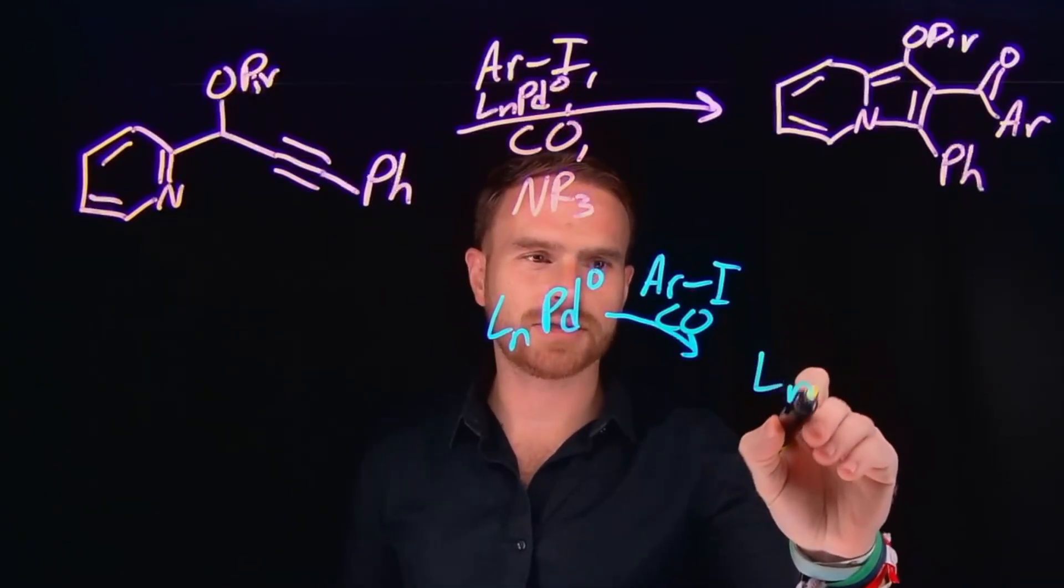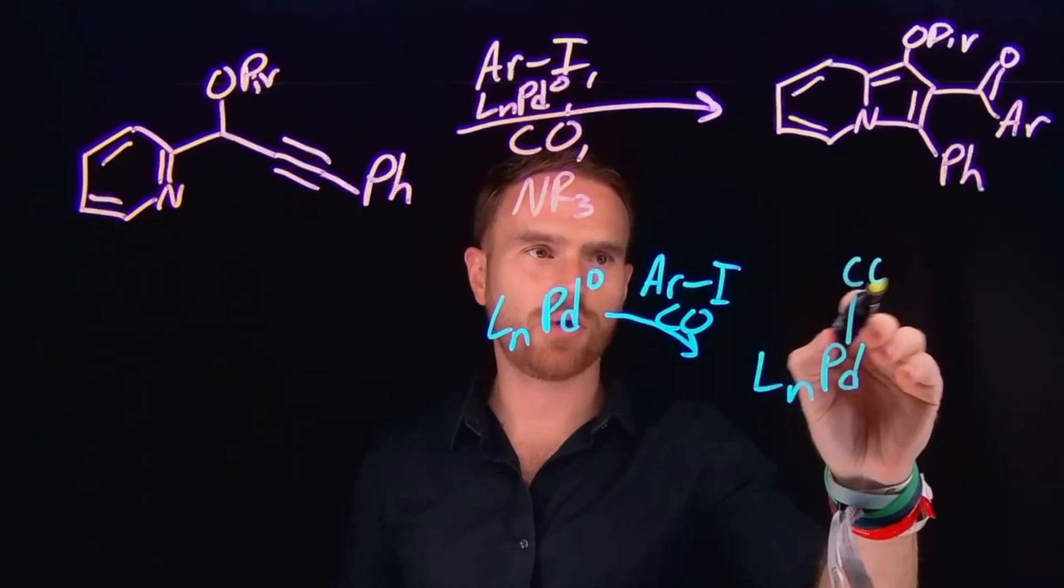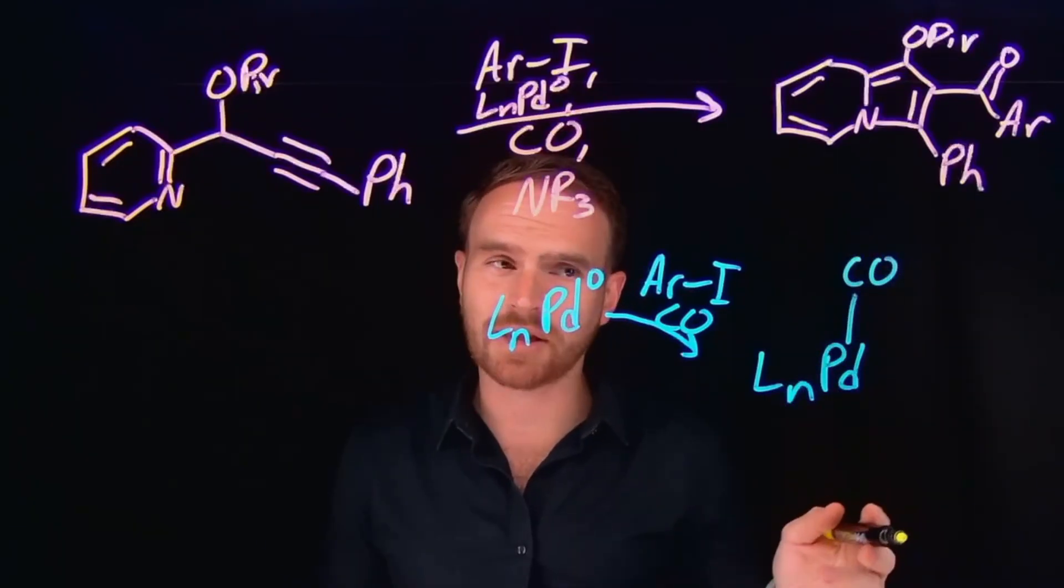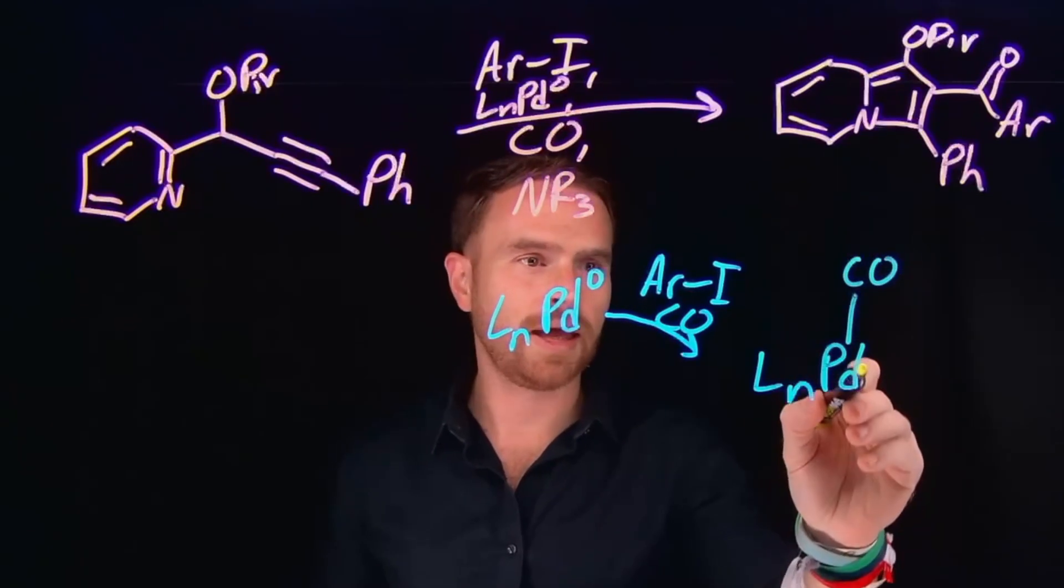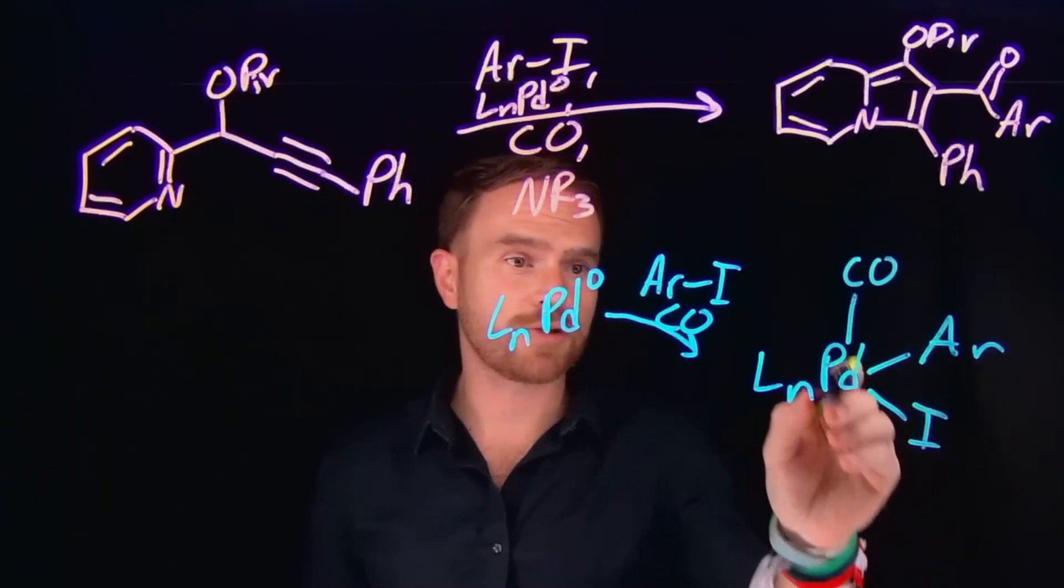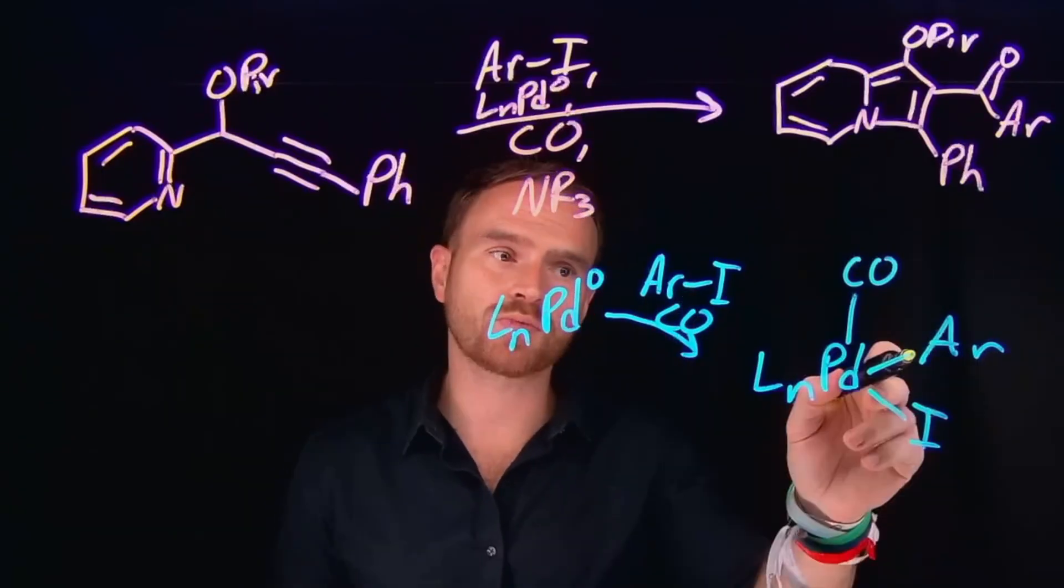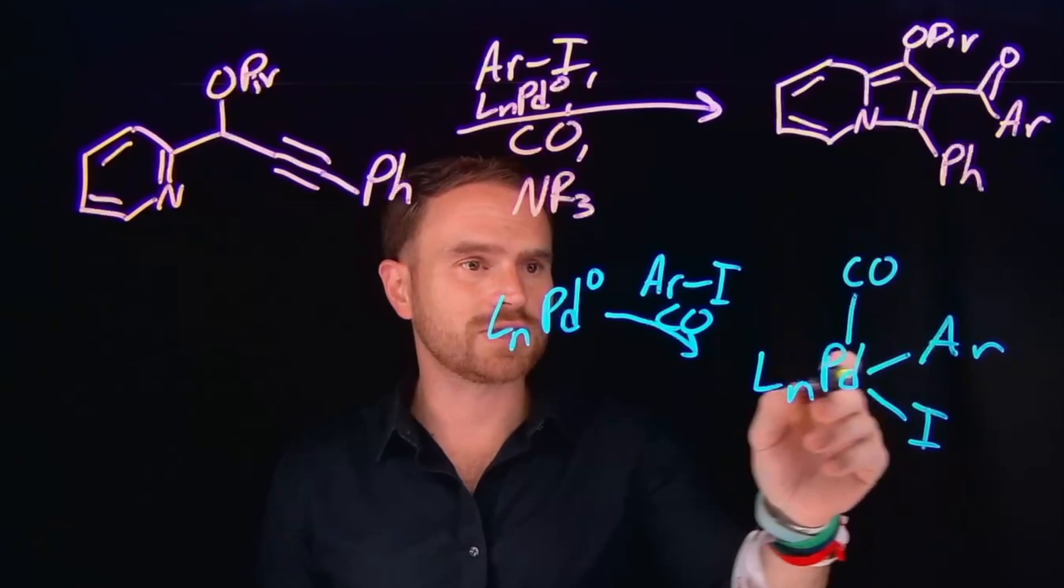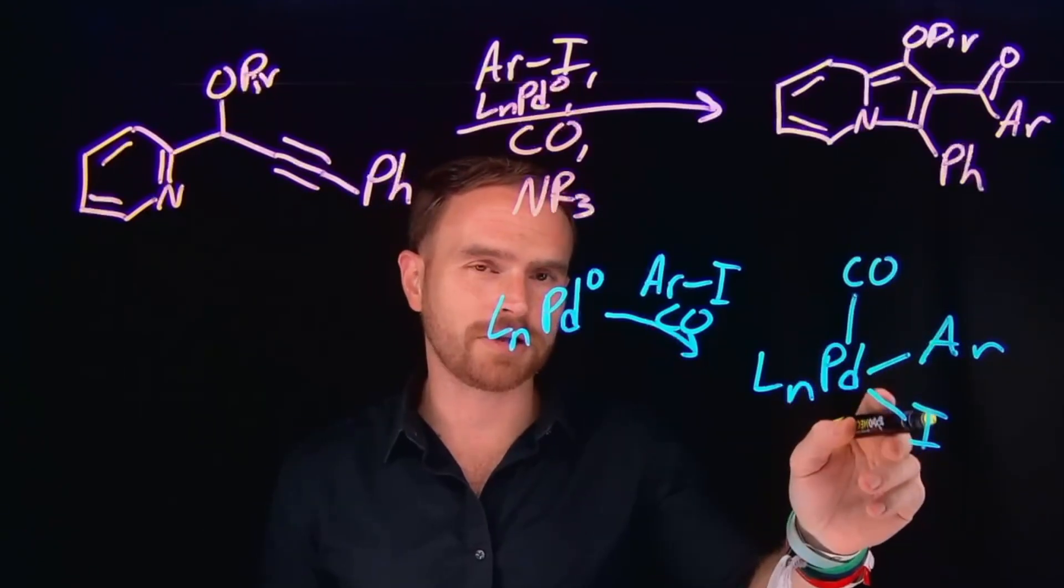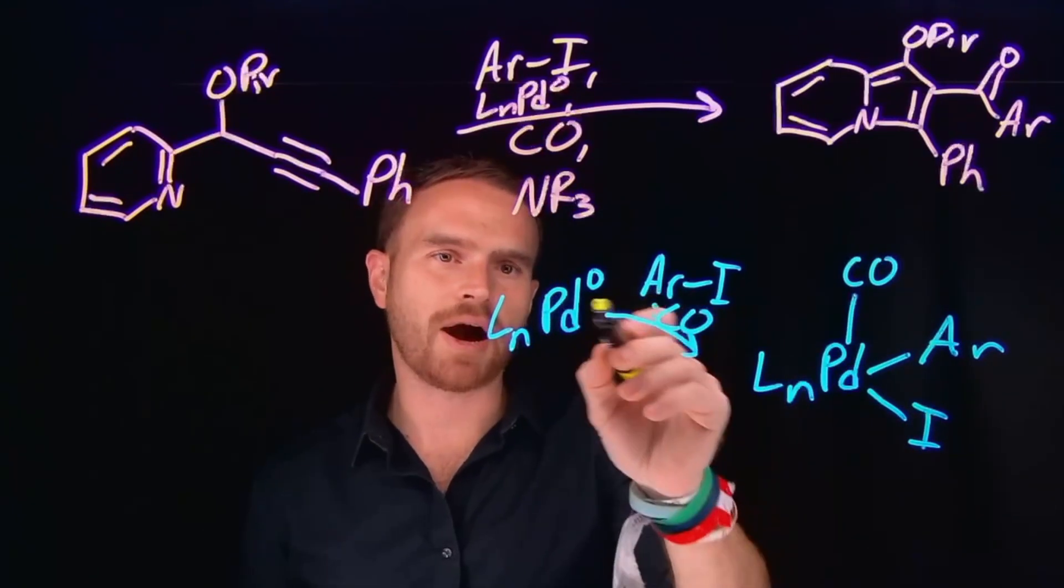So what I can draw then is what this palladium is now going to look like, where there's going to be a CO ligand attached to it, which is a very common ligand in organometallic chemistry, as well as this aryl group, as well as the iodide, because remember the palladium center has inserted itself into that carbon to iodide bond. And for those of you who have never taken an organometallic course, this is what's known as oxidative addition to insert the palladium metal in between this bond and also ligand association where the CO group will come and bind to the metal.